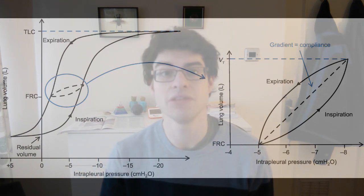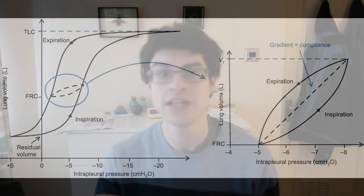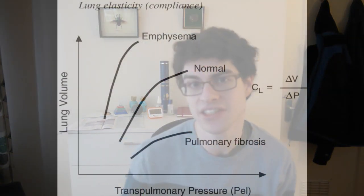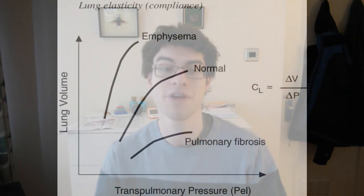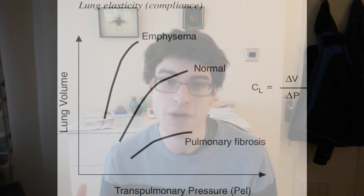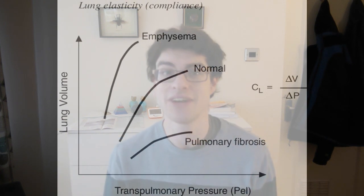Compliance is the change in volume for change in pressure. If you have very fibrotic stiff lungs from interstitial lung disease, you will have a reduced compliance; and if you have very stretchy emphysematous lungs from COPD, you will have an increased compliance. Third, the FRC actually represents the point of optimal compliance — the point at which the work of breathing is the least.